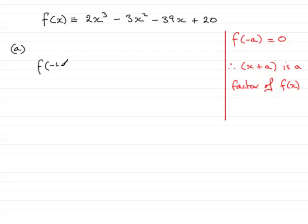We're going to do f(-4). And what would that equal? Well, if we substitute x is -4, then we're going to have 2 times (-4)³, then minus 3 times (-4)², minus 39 times (-4), and plus 20.